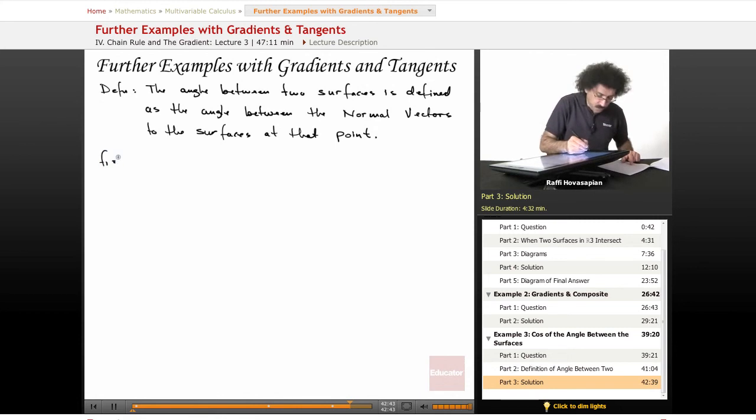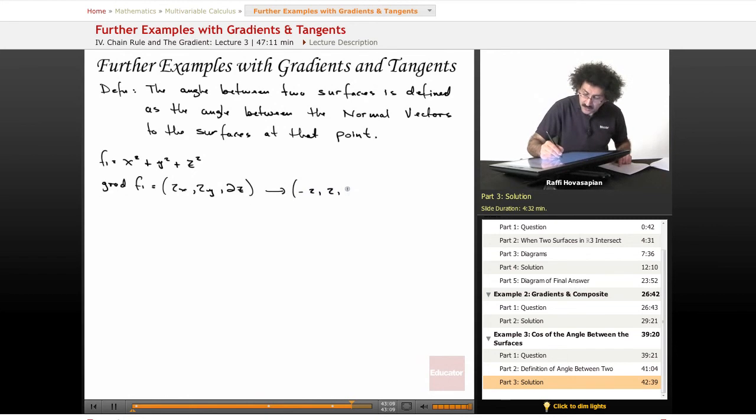So f₁ equals x squared plus y squared plus z squared. Now, the gradient of f₁ equals (2x, 2y, 2z). And when we evaluate at the particular point, we end up with (-2, 2, -12). So that's one of them.